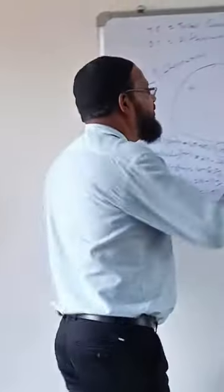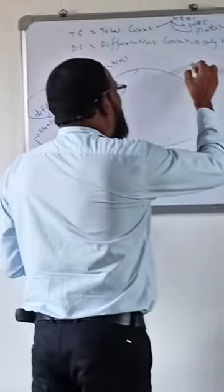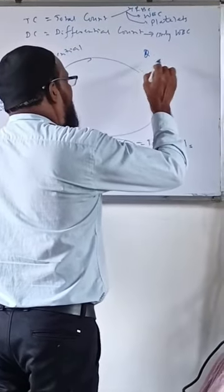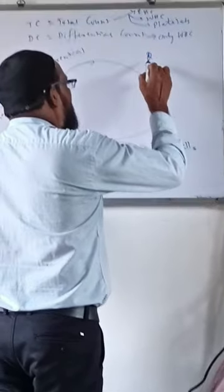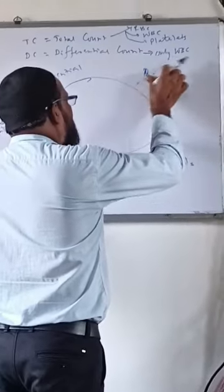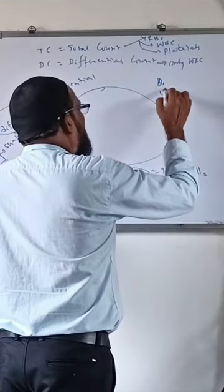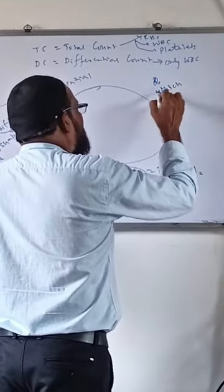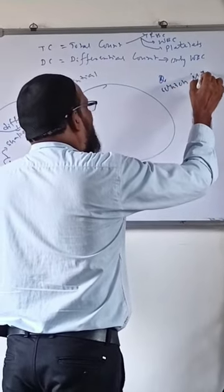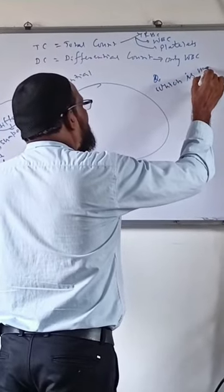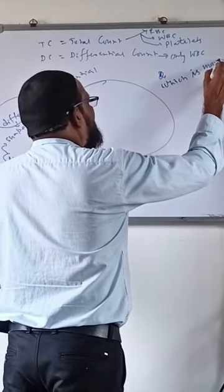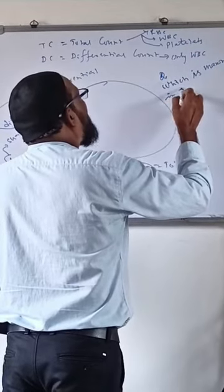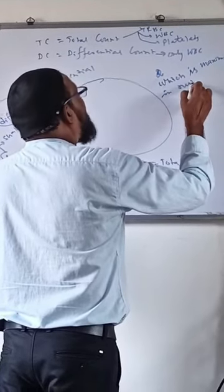Do you know what the question is? It's an MCQ question. Which cell is maximum in number? The highest bar — maximum. Which is maximum in number — the number is important.